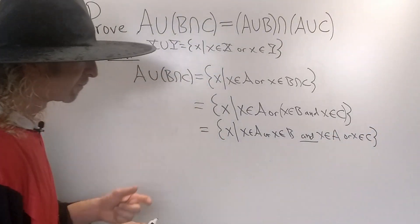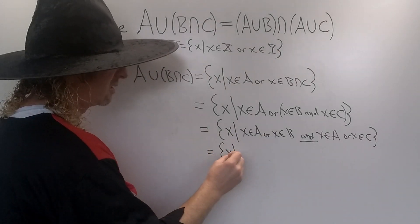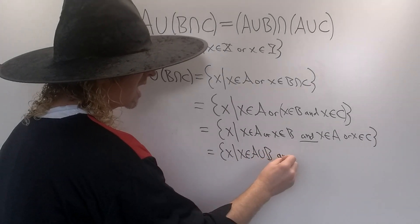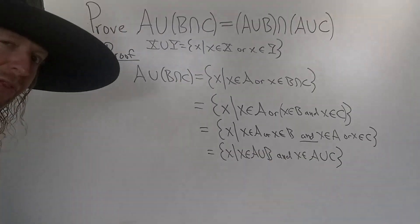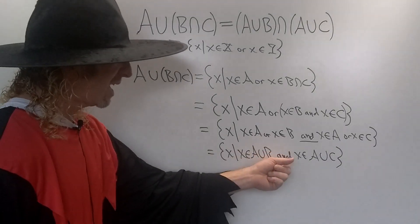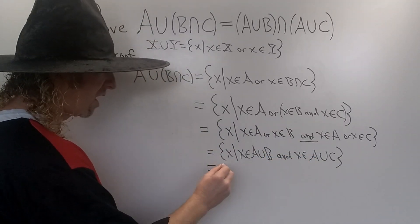And this means that x is in the union. So this is the set of all x such that x is in A union B, and x in A union C. Whenever you have an or you can replace it with the union symbol. And means intersection. So this is precisely the definition of A union B intersect A union C.